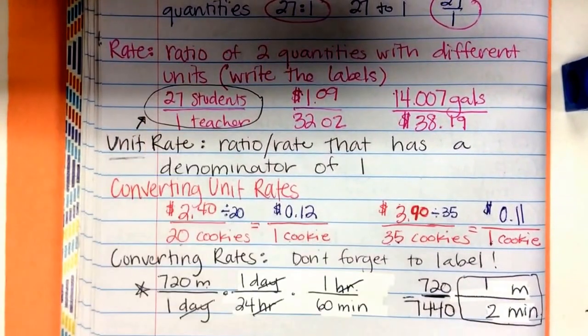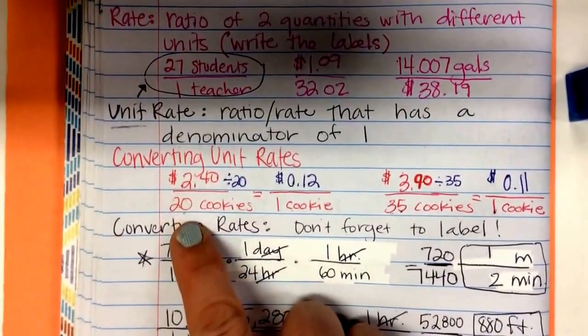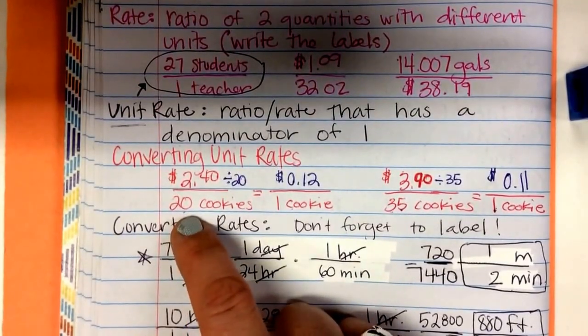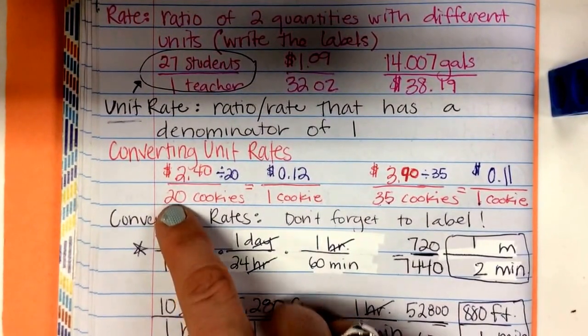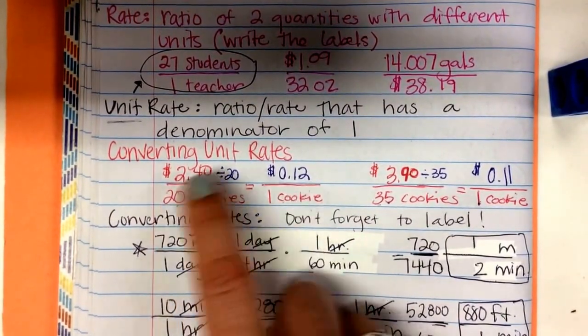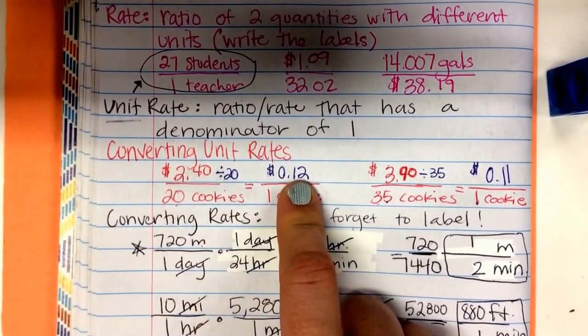You can make rates $2.40 for 20 cookies. You can make that into a unit rate. We divide by the denominator. 20 divided by 20 is 1 cookie. $2.40 divided by 20 is 12 cents.